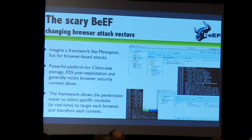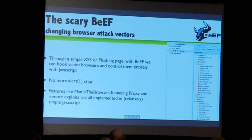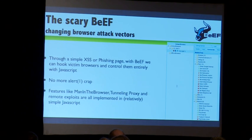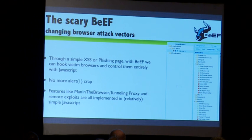Before going into IPE and the shellcode, let me introduce BeEF a bit. The point is that with BeEF, you can really finally do post-exploitation for XSS, or whatever kind of vulnerability where you can inject JavaScript — even HTTP response splitting, or even a phishing page. If you can control a page, as we will see later, we will use a phishing page in our demo.